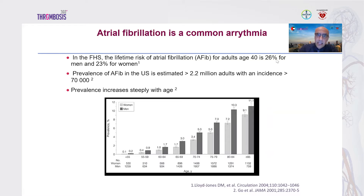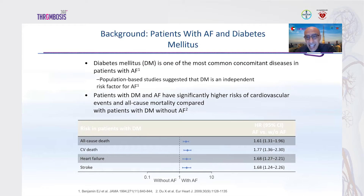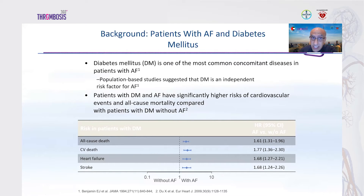The prevalence of AF increases steadily with age. Diabetes and atrial fibrillation frequently occur together — more than 30% of patients with AF have diabetes, and 15% of patients with diabetes also have atrial fibrillation. Patients with both diabetes mellitus and atrial fibrillation have a significantly higher risk of cardiovascular events and all-cause mortality compared to patients with diabetes alone.